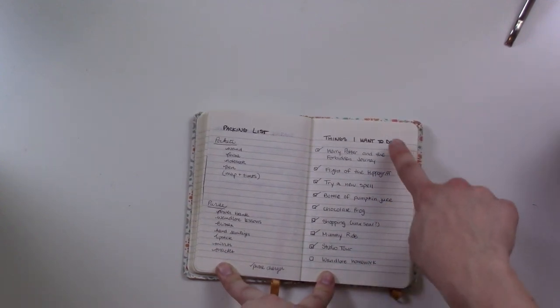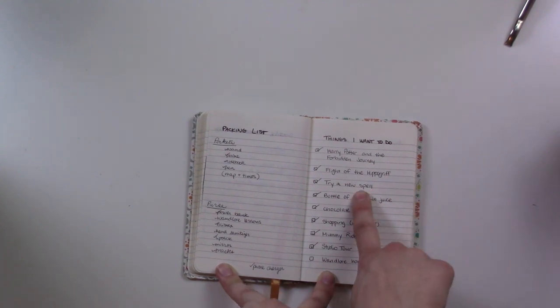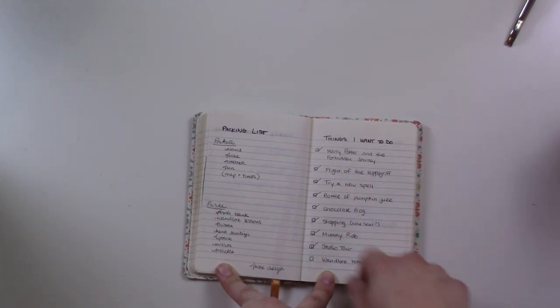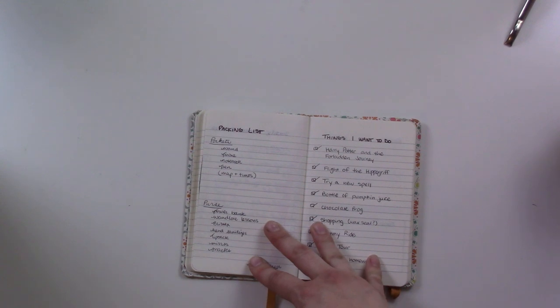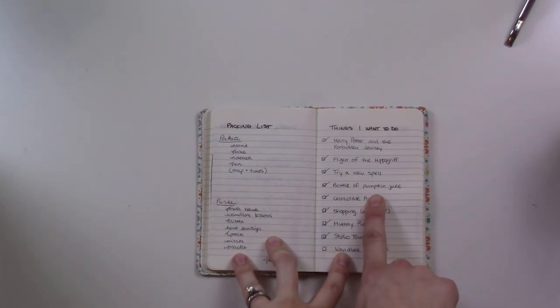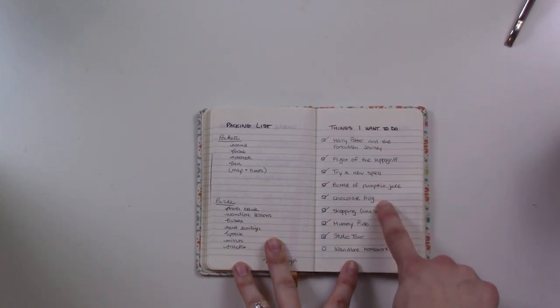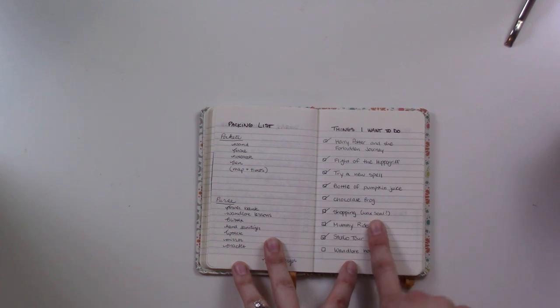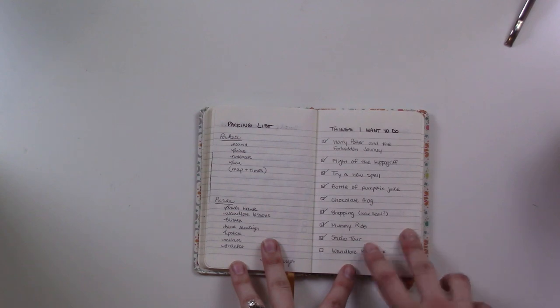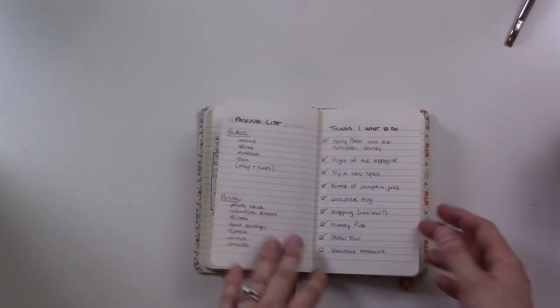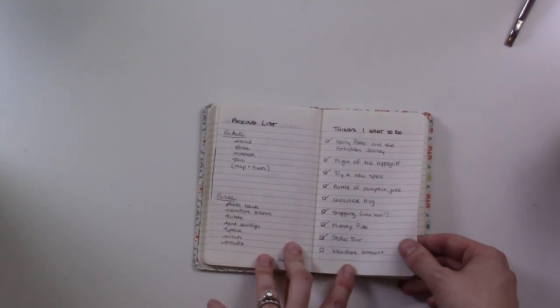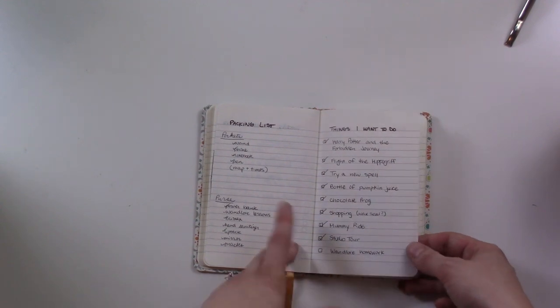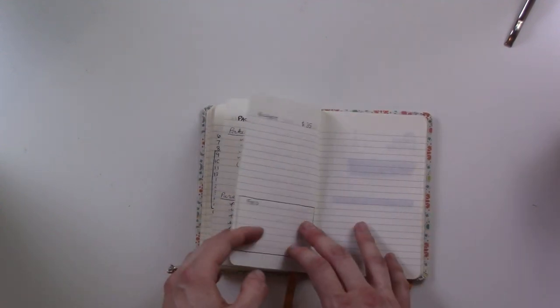Then of course the checklist of things that I wanted to do that day. I wanted to make sure to ride the two rides in there. I wanted to try a new spell because they have the different shop windows and you've got your wand. I wanted to try pumpkin juice because I had tried butterbeer previously but I wanted to try pumpkin juice. I wanted to get a chocolate frog because I was collecting the cards and then there was the wax seal set that I wanted to get. I wanted to go on the mummy ride because it's my favorite and I wanted to do the studio tour again because I always wanted to do that once per visit because things change. And then I didn't get to, the one thing that was just if I have down time I brought some MH homework to work on. Didn't get to that.